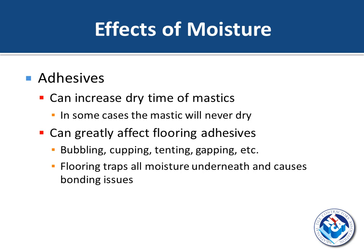Adhesives can be greatly affected by moisture, presenting in resilient installations as bubbling, cupping, tenting, gapping, etc. In a sheet vinyl installation there are no grout joints for moisture to escape through — all that moisture is trapped underneath and can cause debonding issues. Additionally, like mastics, this can lead to mold and mildew, which is not desirable in schools and hospitals. This is something to keep in mind when working with any adhesive, whether resilient flooring adhesives or mastic.